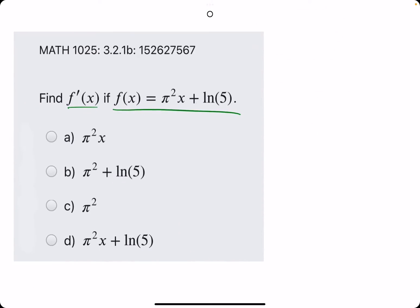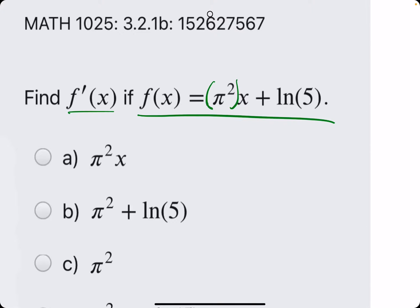So when we apply that here we have a constant π² times x, so the first part of our derivative will be π² just that coefficient and the x goes away.